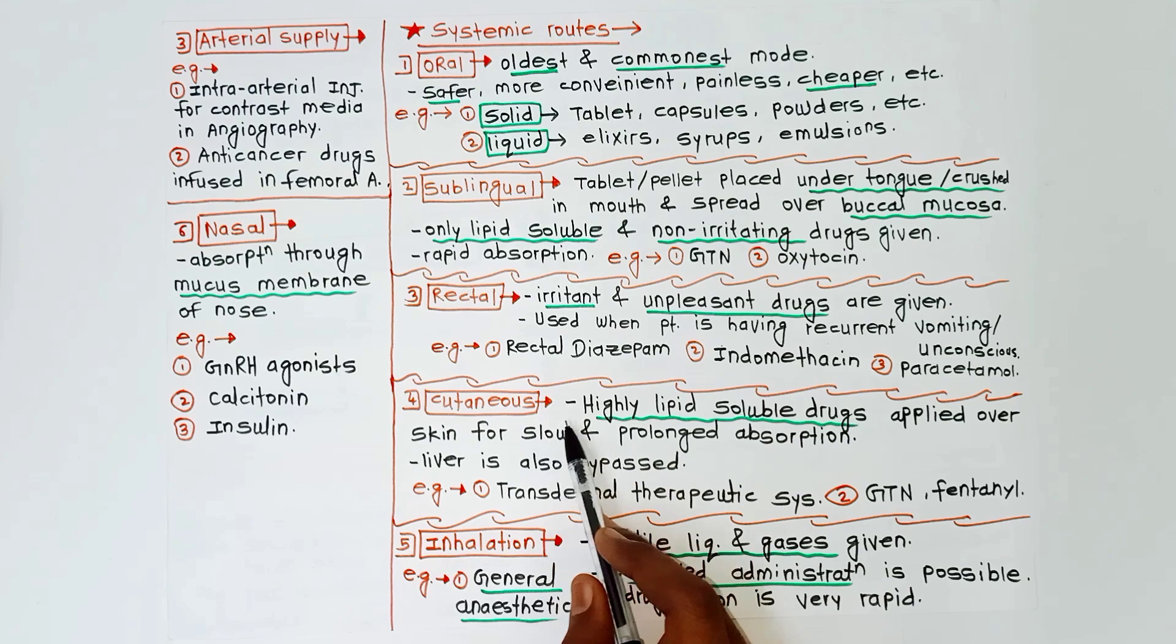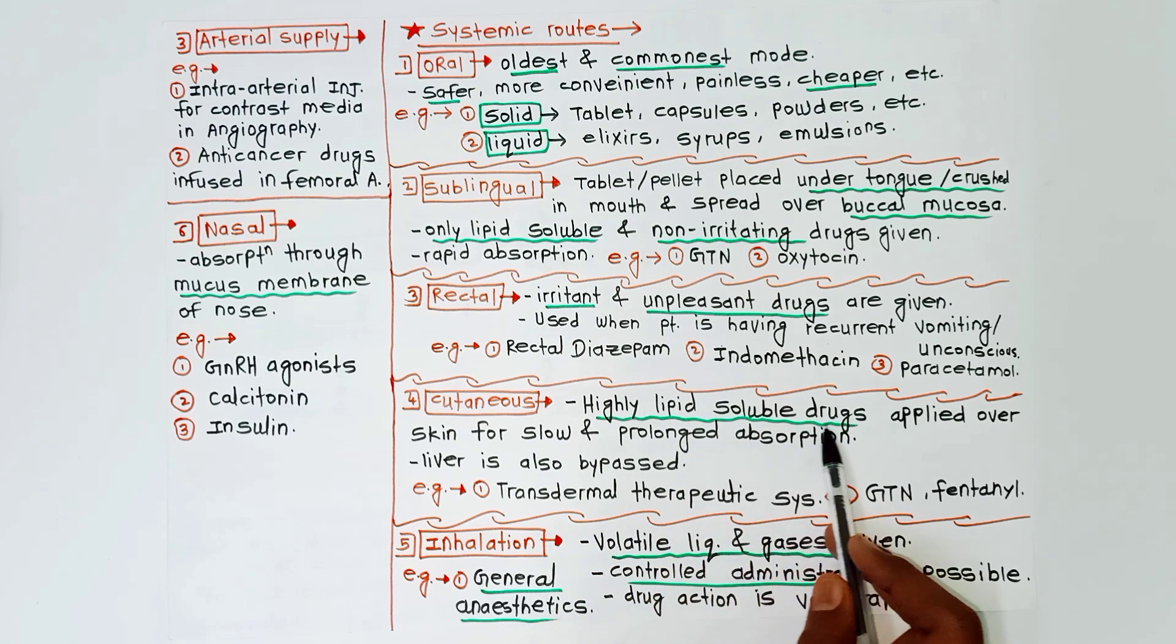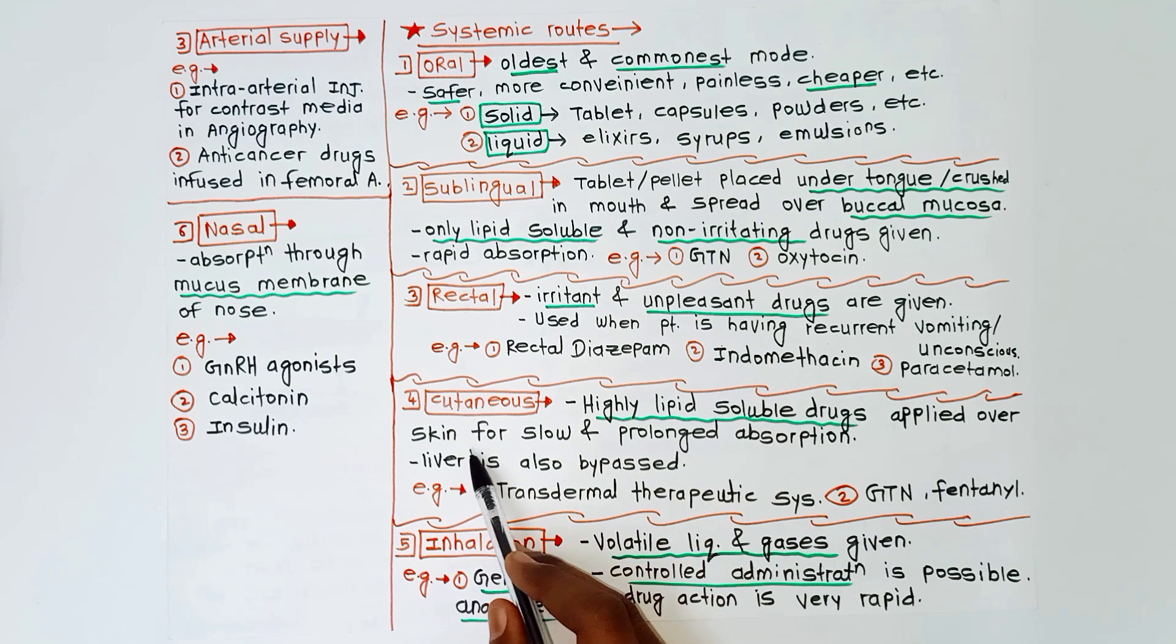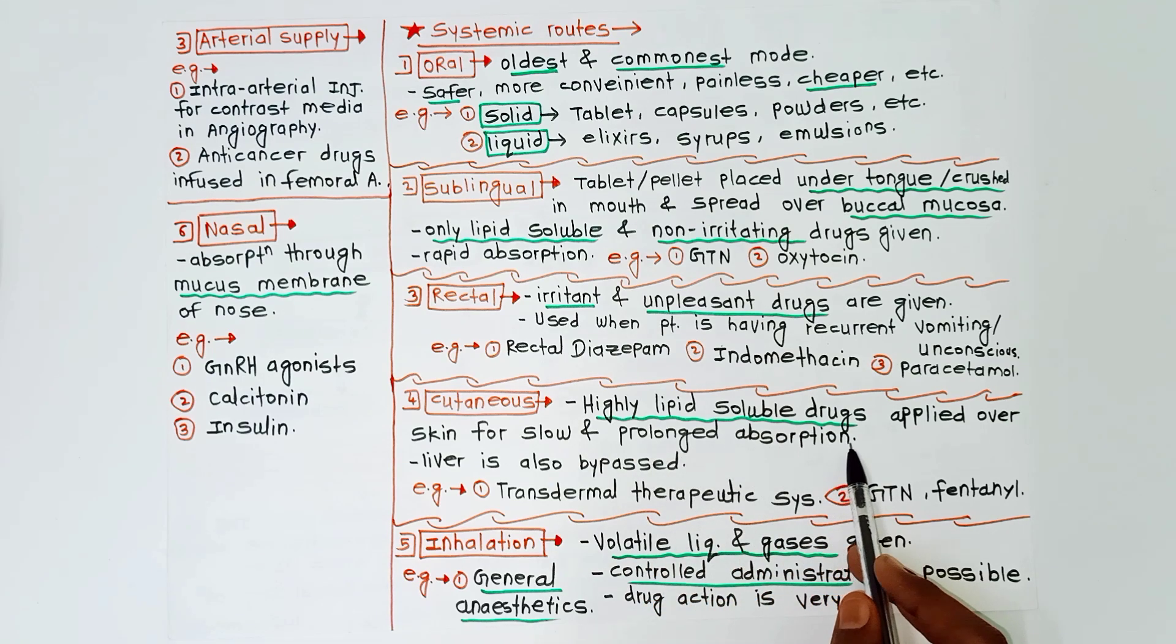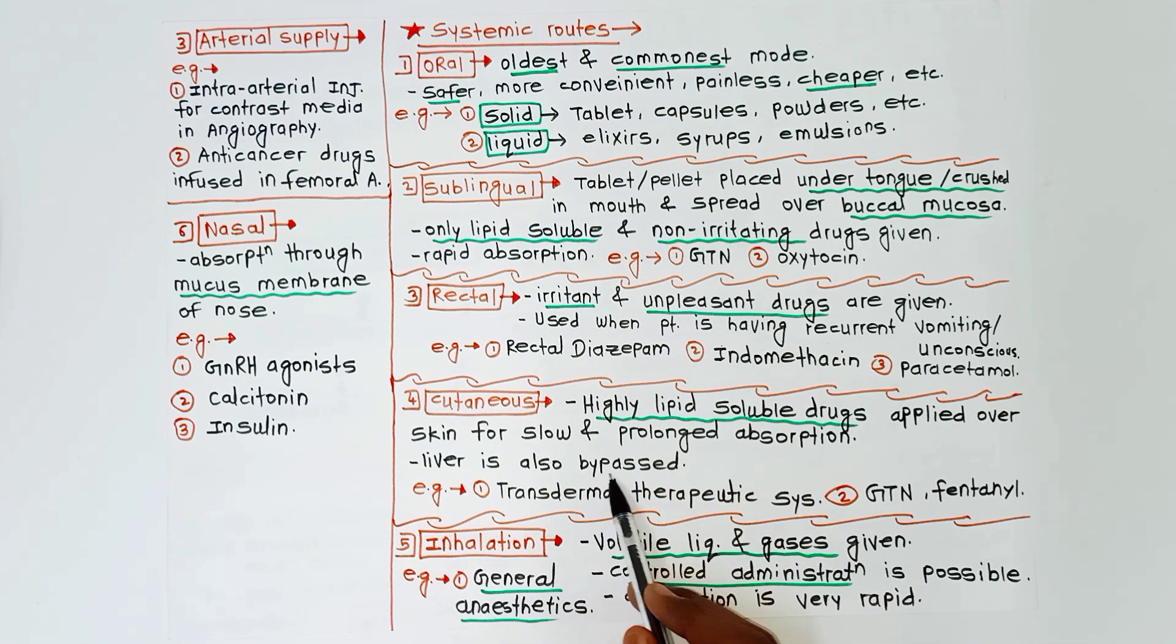Next is cutaneous route. In this, highly lipid-soluble drugs are applied over skin for slow and prolonged absorption. Liver is also bypassed in this case. Example of this is transdermal therapeutic systems - this I will cover in a separate video. This will be asked in your exam as a short note. Next is GTN and fentanyl. GTN means glyceryl trinitrate.